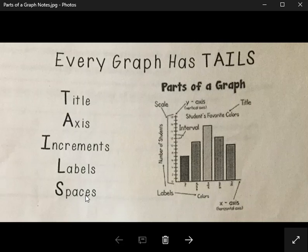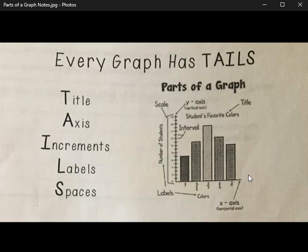The S is for spaces, and the spaces are really important. In this bar graph, there's space between each of the bars that helps to break up the graph. For my eye looking at all this information and taking it in, I want to make sure I have some space so I can read the information clearly.